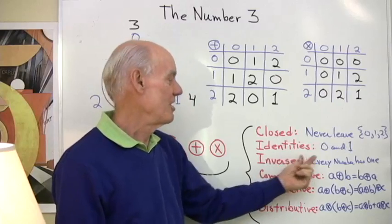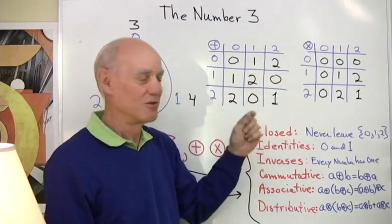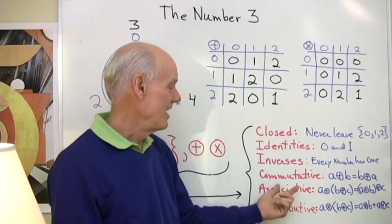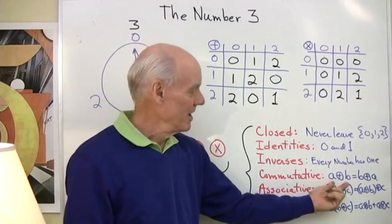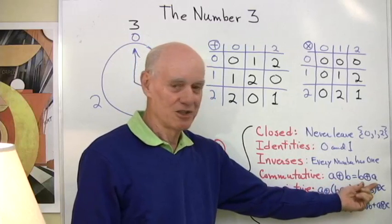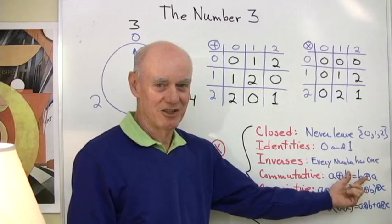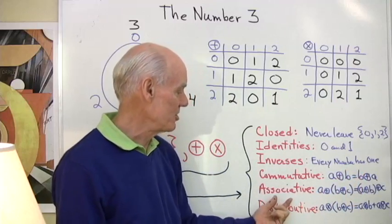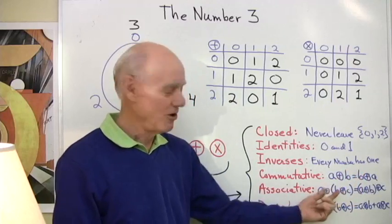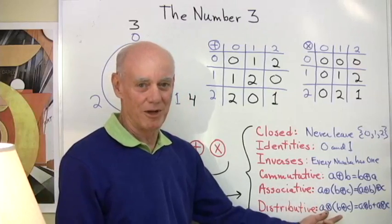Every number has an inverse. Every number has a way to get back to the identities 0 and 1. There's a commutative property: A circle plus B is B circle plus A. It works for that circle addition and circle multiplication. The associative property holds and there's a distributive property that holds.